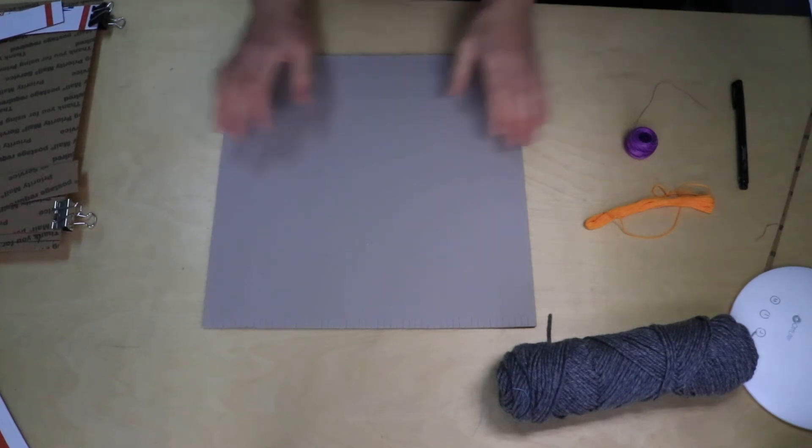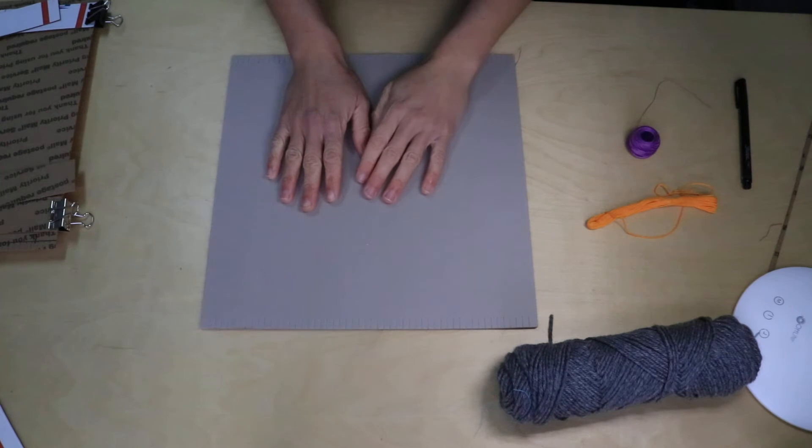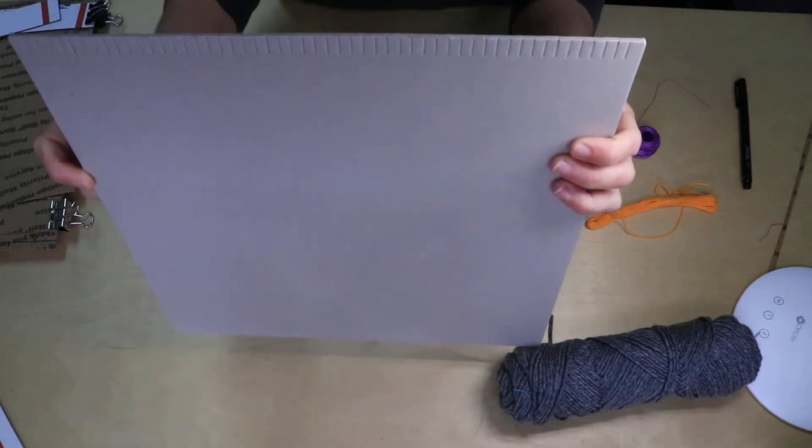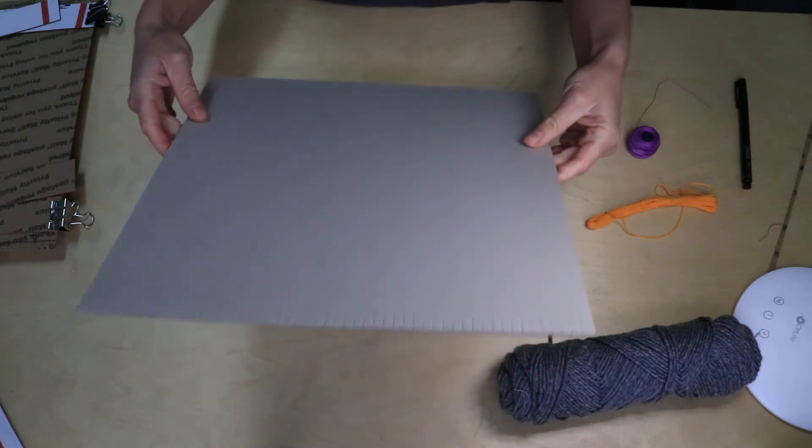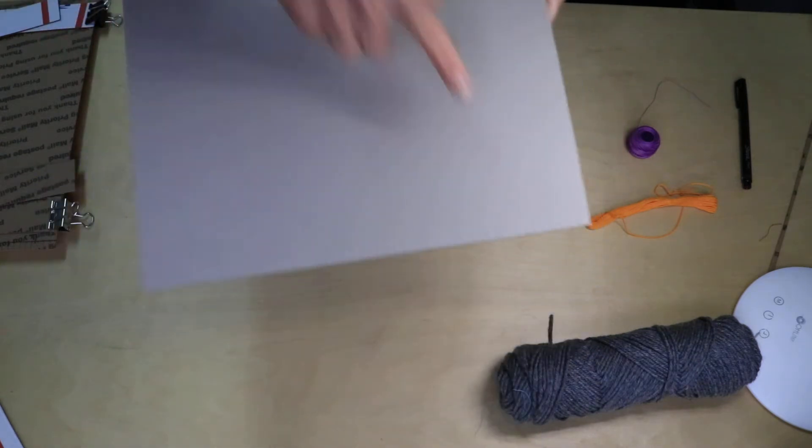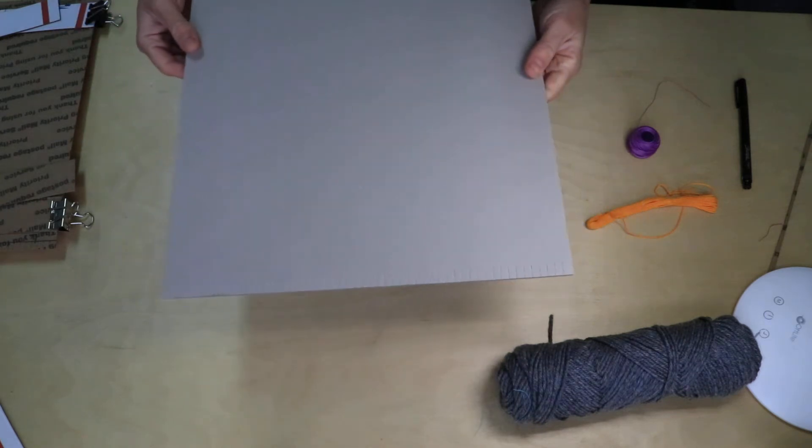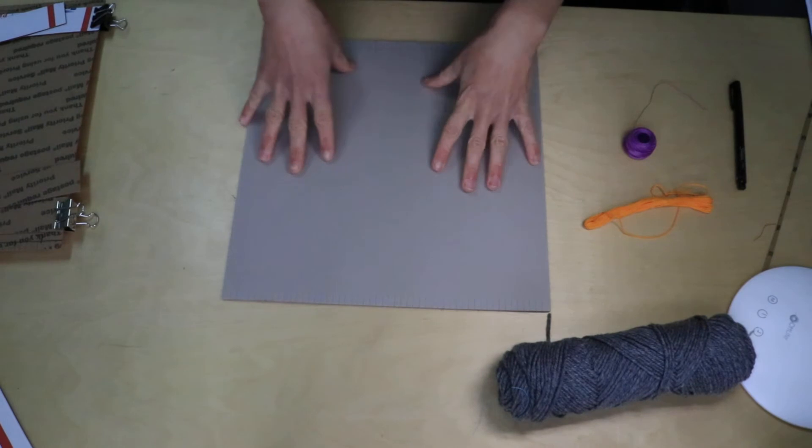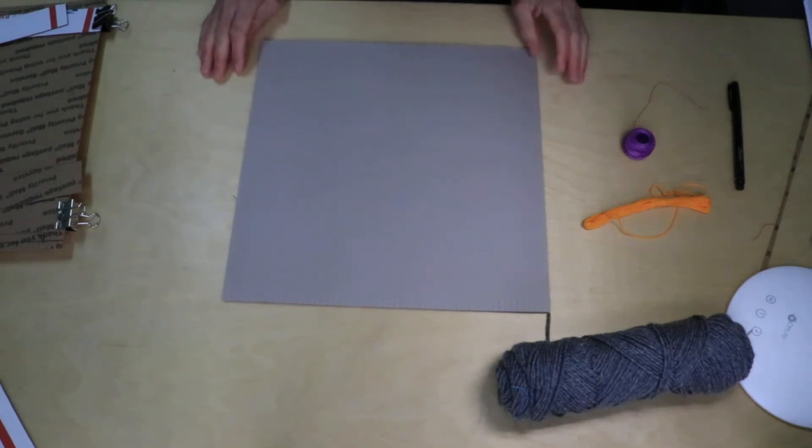Okay, this demo is going to cover how to warp a tab loom. Here I have a pre-made chipboard tab loom where you can see all the tabs up here. They were already cut for me, which is pretty nice. This just came in a sheet like this.